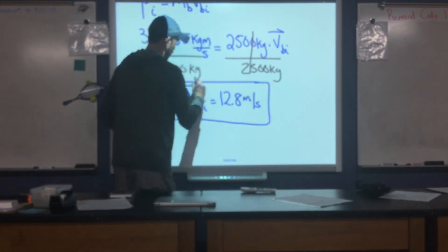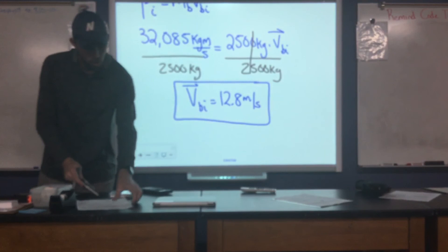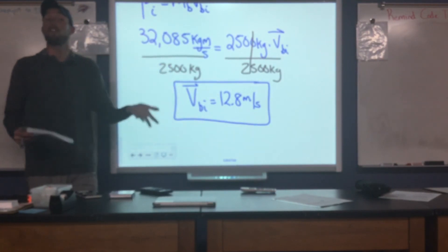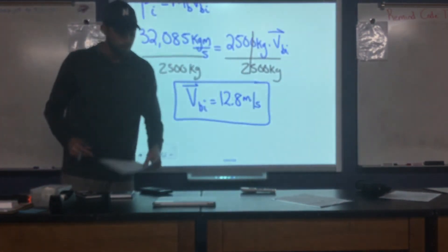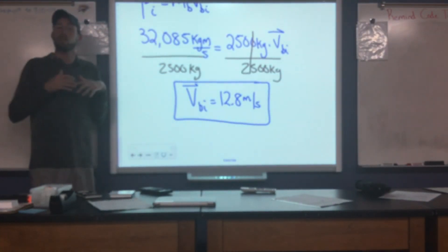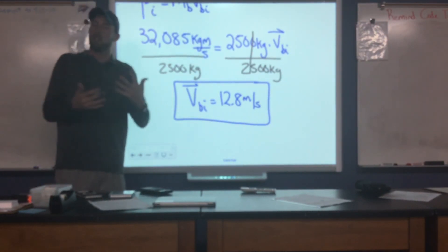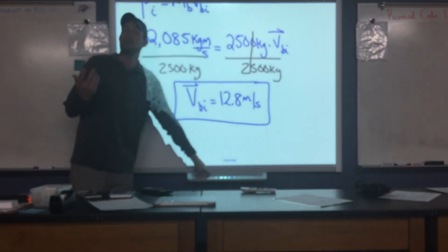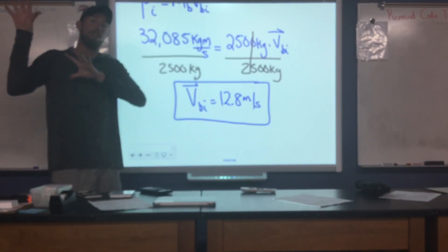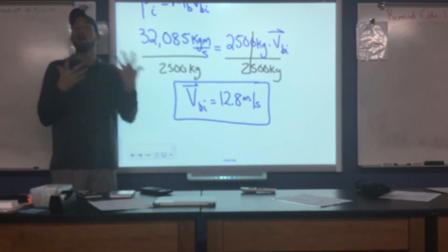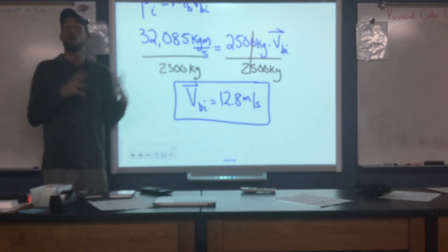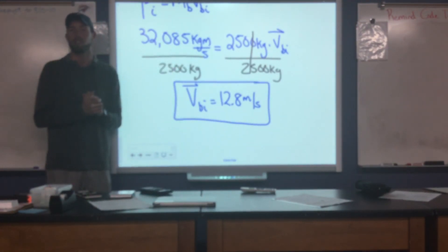Dividing both sides by 2,500: v_blue = 32,085 ÷ 2,500 ≈ 12.83 meters per second. That tells us the velocity of the blue car prior to the collision. The speed limit was 11.2 meters per second, so we now have evidence to show the driver of the blue car was speeding and would get a ticket. Here we've taken the concepts of momentum and conservation, integrated older concepts of forces and Newton's laws. As always, if you have questions, don't hesitate to ask, and check Canvas for other resources. Good luck.